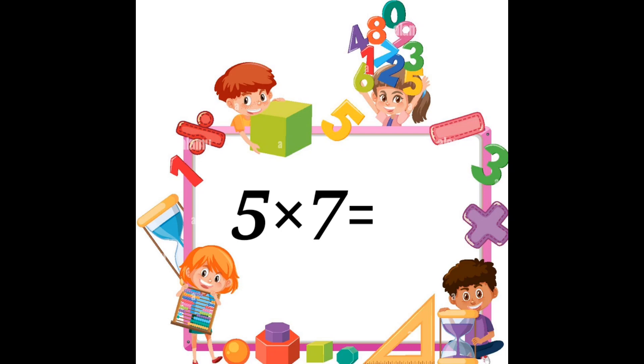Five sevens are thirty-five. Five sevens are thirty-five. Five eights are forty. Five eights are forty.